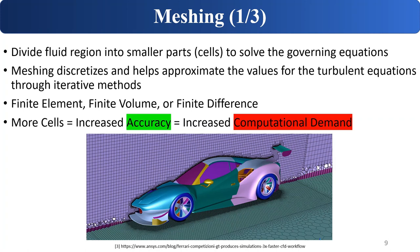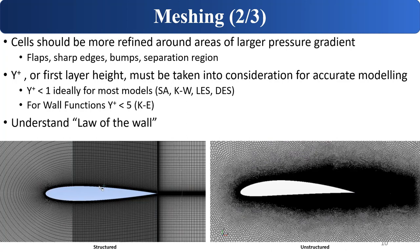In general for meshing, always remember: more cells equals increased accuracy, but also increased computational demand. There's always a balance between what is accurate and what can be done in a reasonable amount of time. DNS is in theory the most accurate you can get, but the computational demand is unrealistic — it would take years for a simulation to run in DNS unless you had a very capable supercomputer.